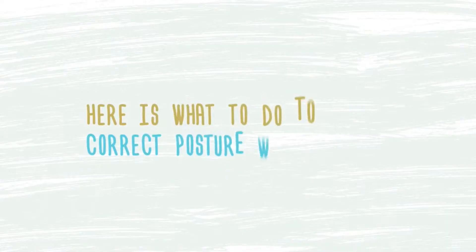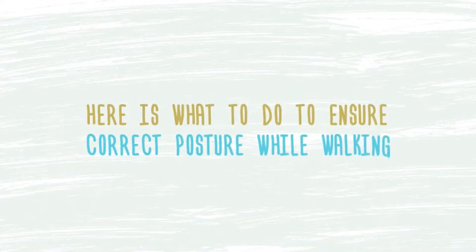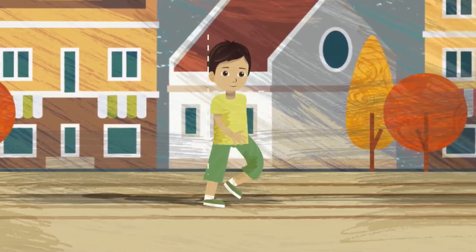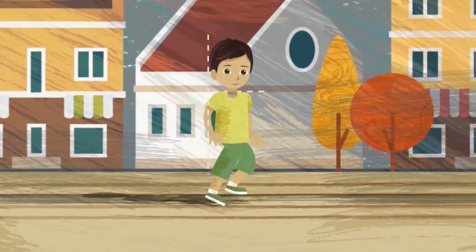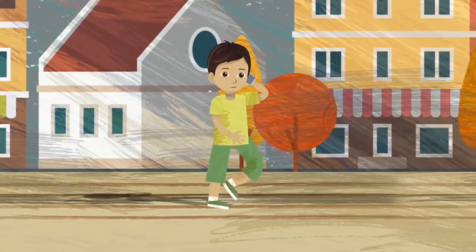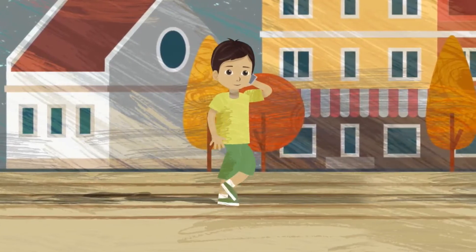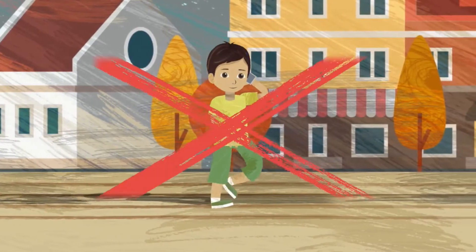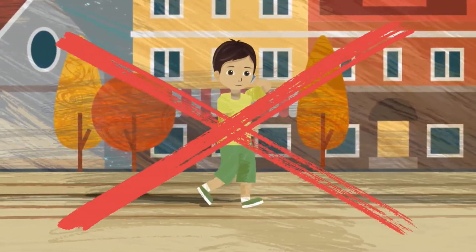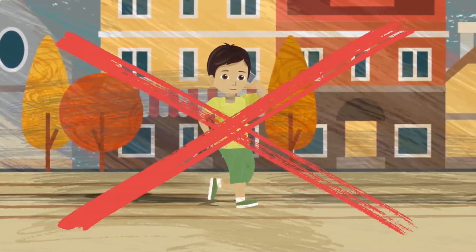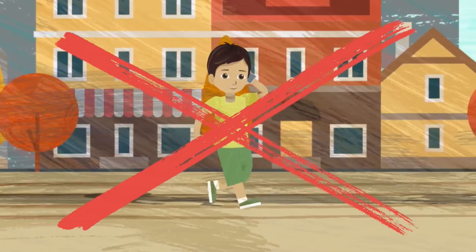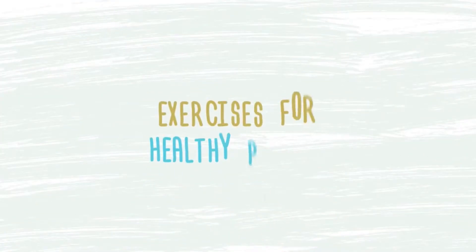Here is what to do to ensure correct posture while walking. Keep your back straight, do not tilt your head too much. Shoulders should be leaning slightly back. Often, the cause of a hunched back is frequent use of mobile phones while walking. Therefore, it is important not to use mobile devices too much while moving.